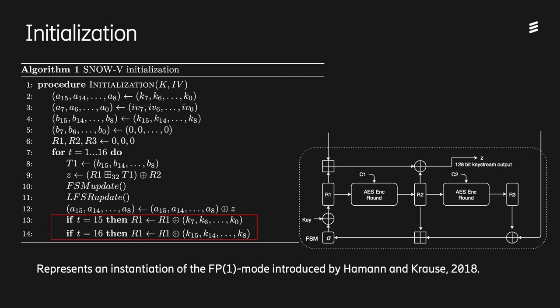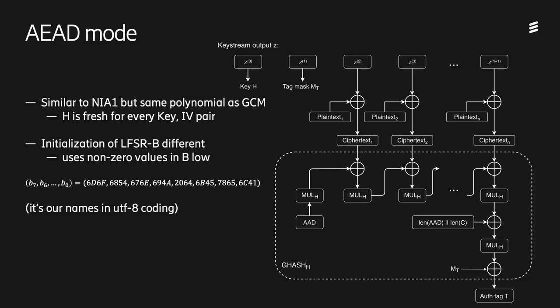This represents an instantiation of the FP1 mode introduced by Hamann and Krauss in 2018, and makes it harder for anyone that has obtained the state at a particular time to run the cipher backwards and obtain the starting state, and thus the key. In this paper, we also specify an AEAD mode — authenticated encryption with additional data. It's basically the same construction as the integrity algorithm NIA-1 in 5G, but the polynomial is 128 bits, the same as in AES-GCM.